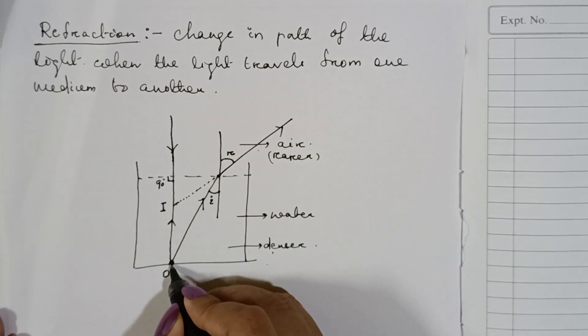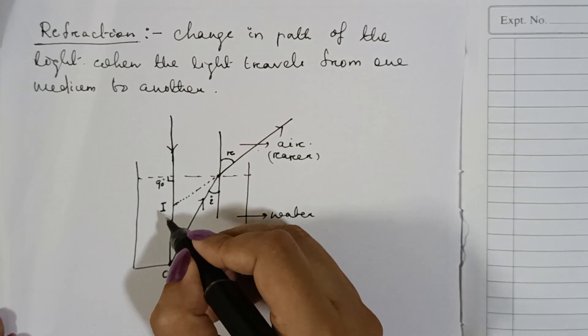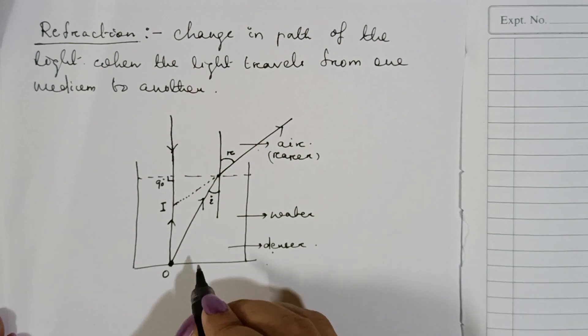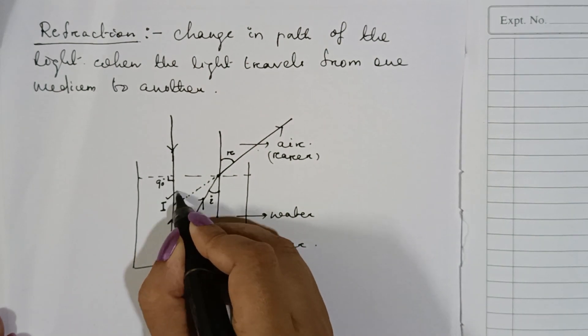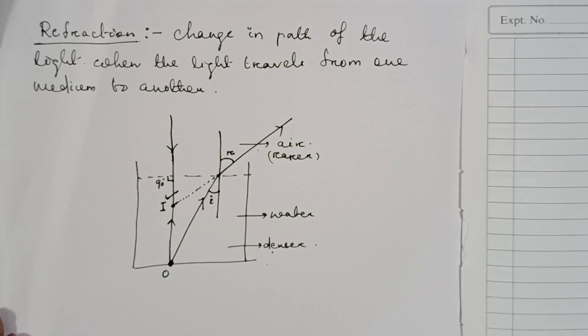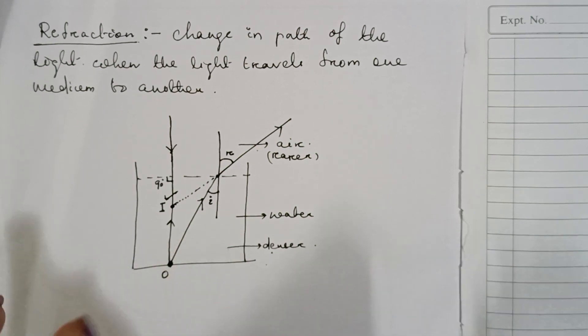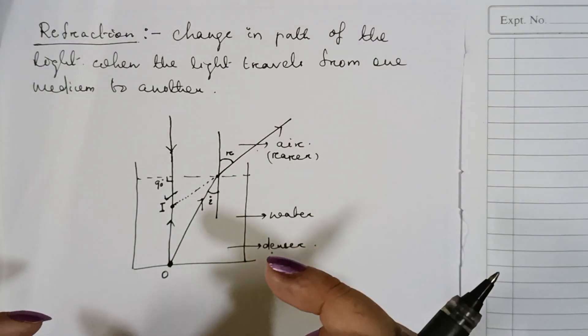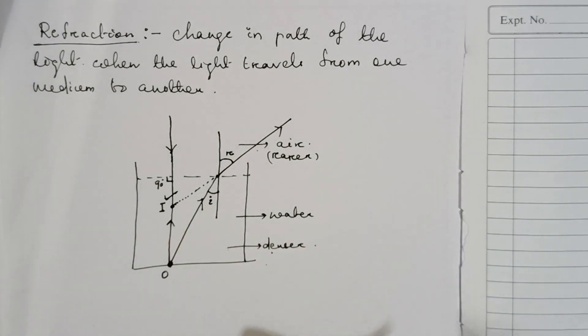The object is here. But inside the denser medium it seems like the object is here at this point. So that's why it appears as a bending effect or as if the pencil is broken.